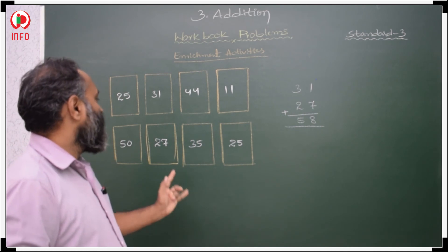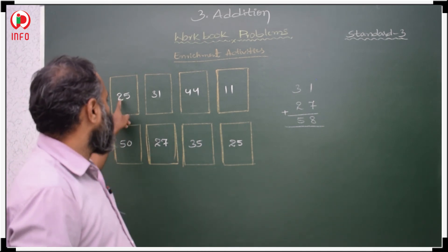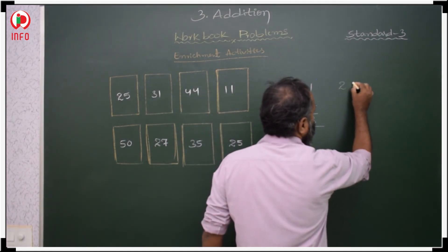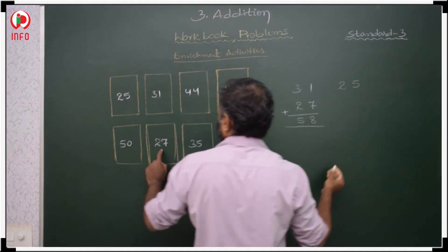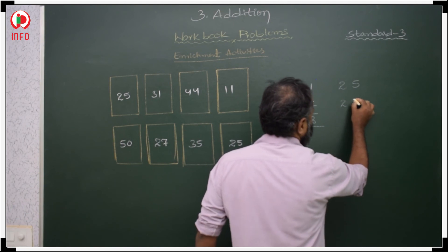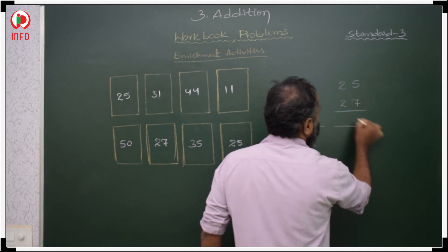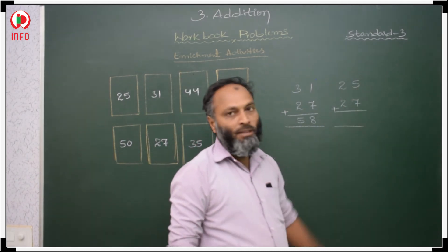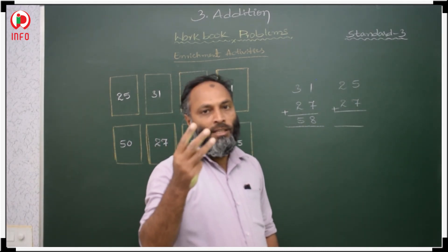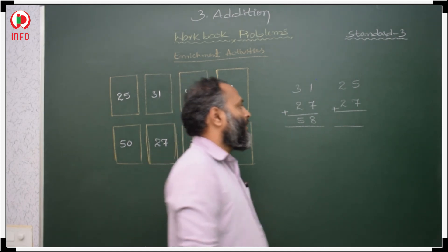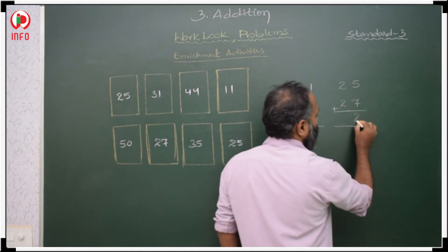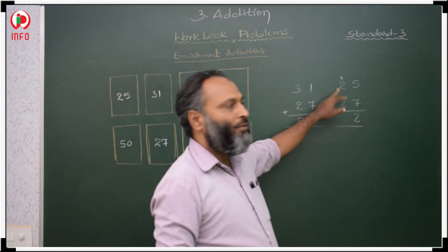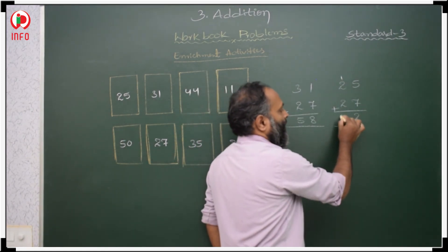Next, select 2 more cards: 25 and 27. Add: 7 plus 5 is 12 — 2 here and carry 1. Then 2 plus 2 is 4, plus 1 carry is 5. Sum is 52. It is better to prepare more — around 10 single-digit cards from 0 to 9 as well.